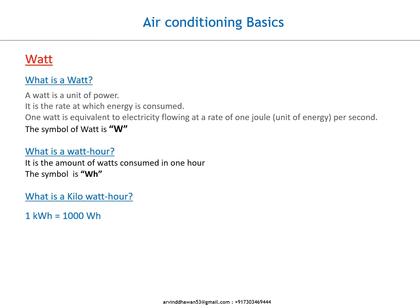What is a watt? A watt is a unit of power — it is the rate at which energy is consumed. 1 W is equivalent to electricity flowing at a rate of 1 joule of energy per second. The symbol for watt is W. What is a watt-hour? It is the amount of watts consumed in 1 hour; the symbol is Wh. 1 kilowatt-hour equals 1000 Wh.